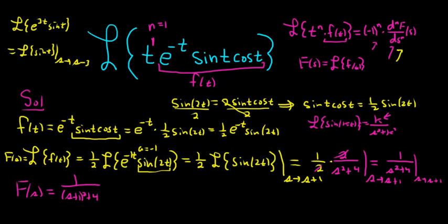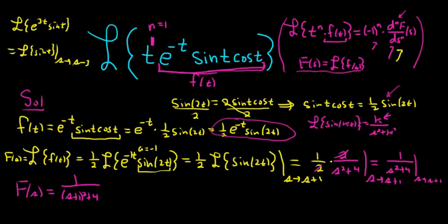So recap: we saw t to a power, so we used the differentiation formula. We had sine t cosine t which we rewrote using the trig identity, then used the first translation theorem to compute the Laplace of little f. Now we have big F of s, which is the Laplace of little f, and we can take the derivative of big F and plug it into the formula.